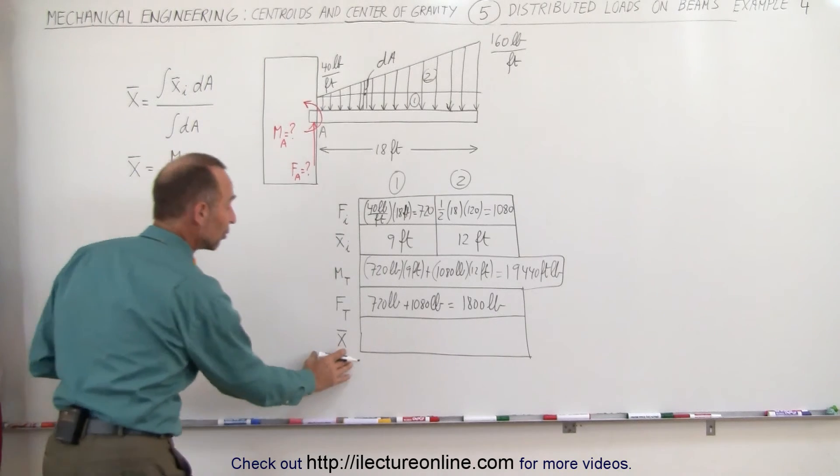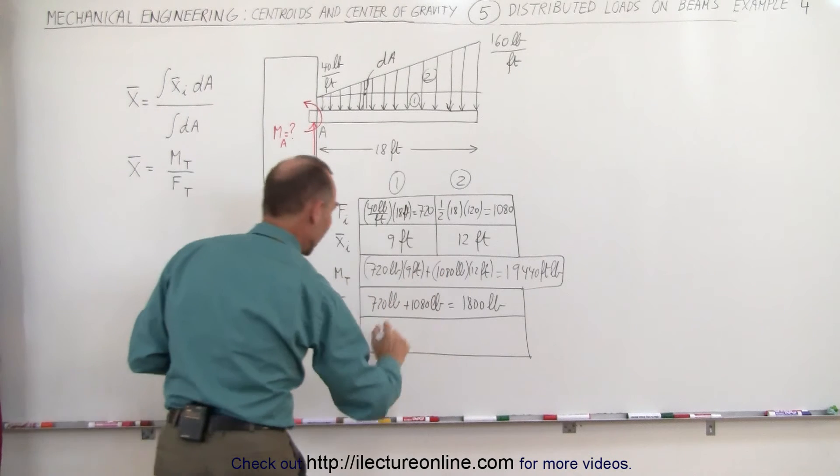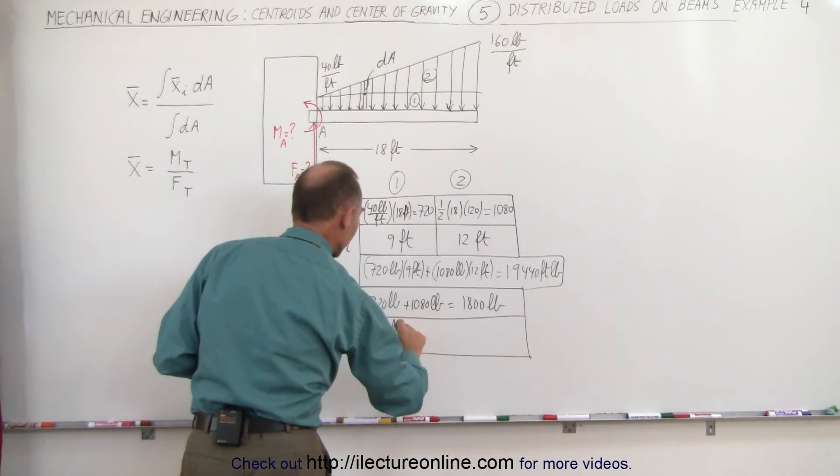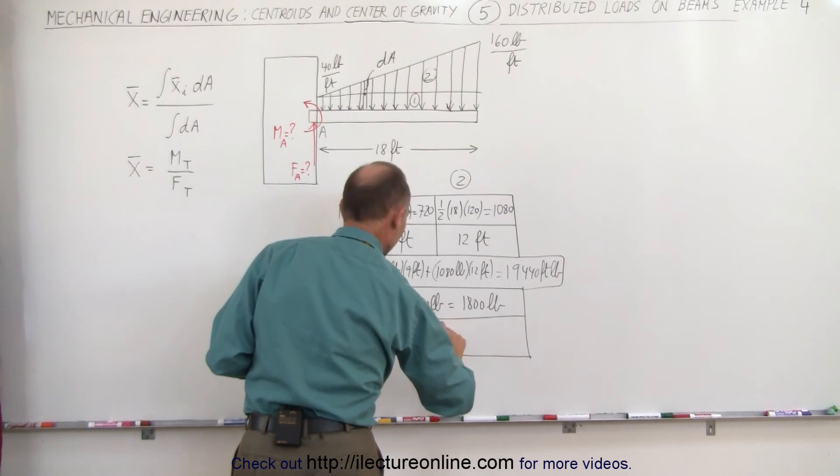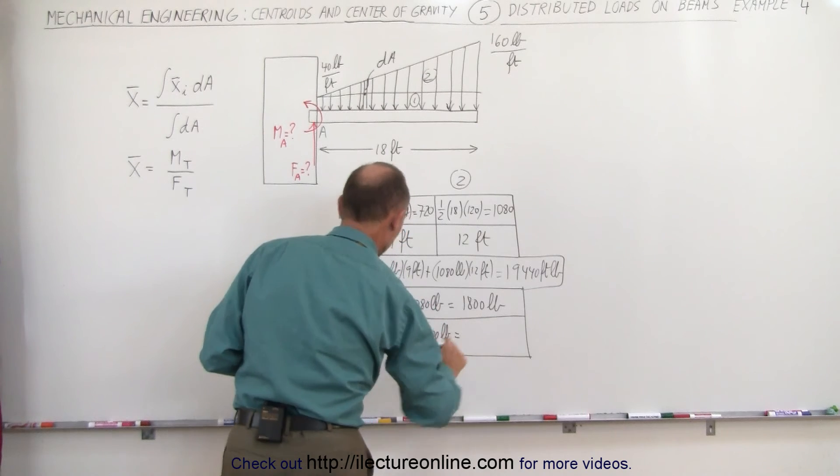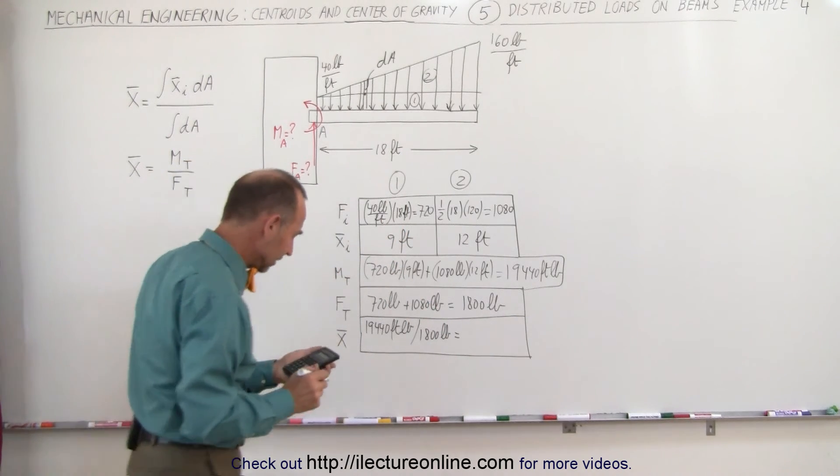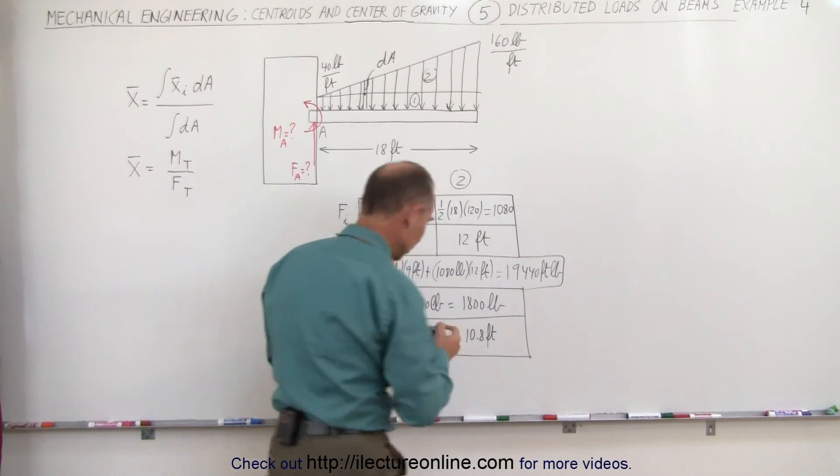And finally to find the x centroid we divide the moment by the total force. In this case 19,440 foot pounds divided by the total force 1800 pounds, and we get 10.8 feet, which is the location of the centroid.